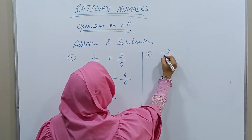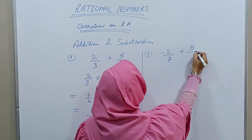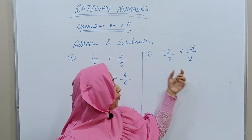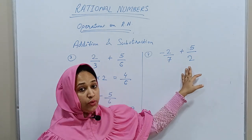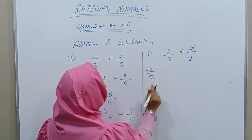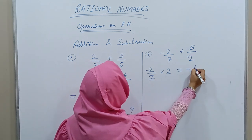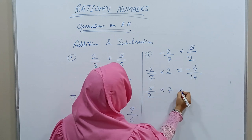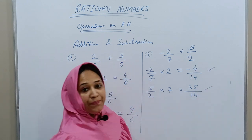Now let's take a different example: -2/7 + 5/2. Here 7 is not a multiple of 2 and 2 is not a multiple of 7, so we find the LCM of 7 and 2, which is 14. To make the denominator of -2/7 equal to 14, we multiply by 2/2, giving -4/14. For 5/2, we multiply by 7/7, giving 35/14.